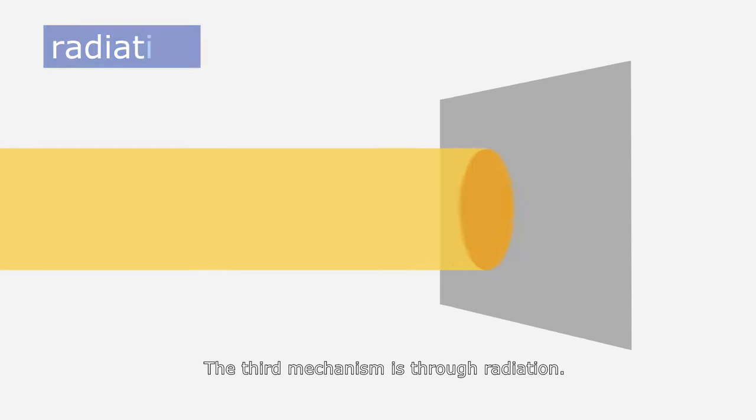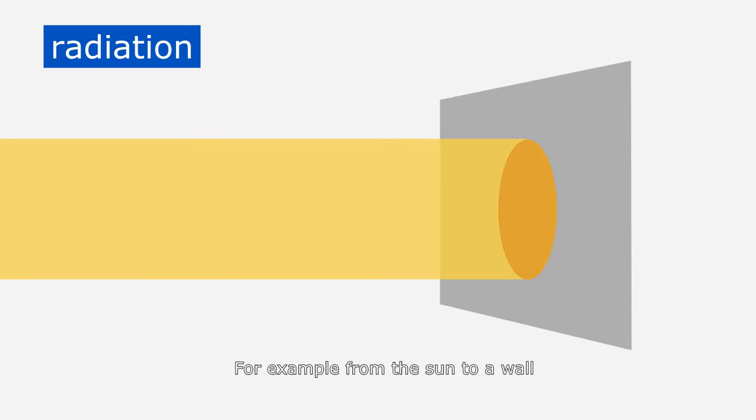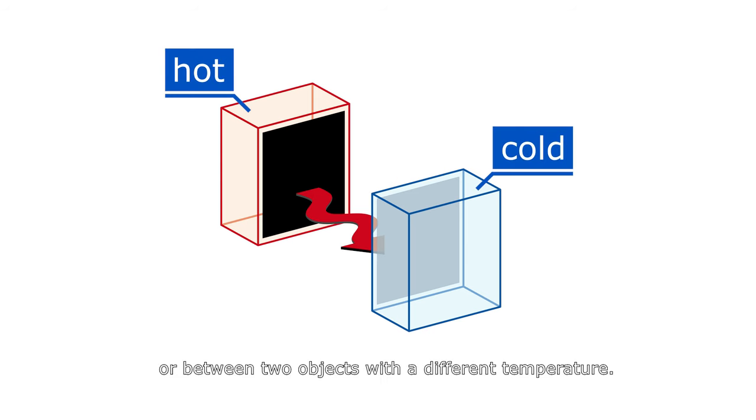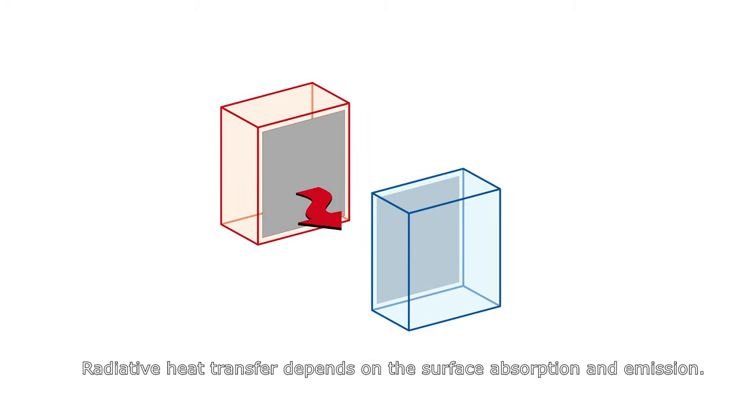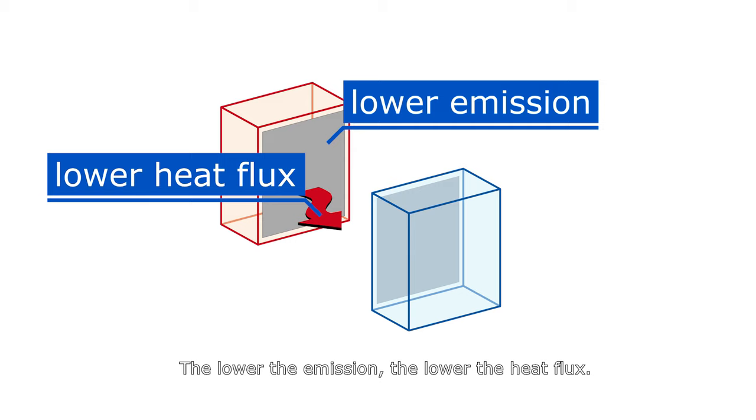The third mechanism is through radiation. For example, from the sun to a wall or between two objects with a different temperature. Radiative heat transfer depends on the surface absorption and emission. The lower the emission, the lower the heat flux.